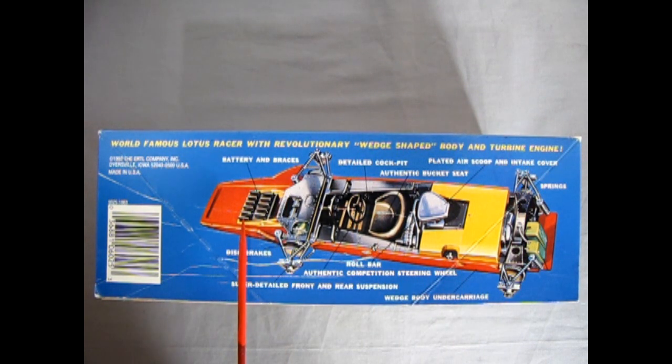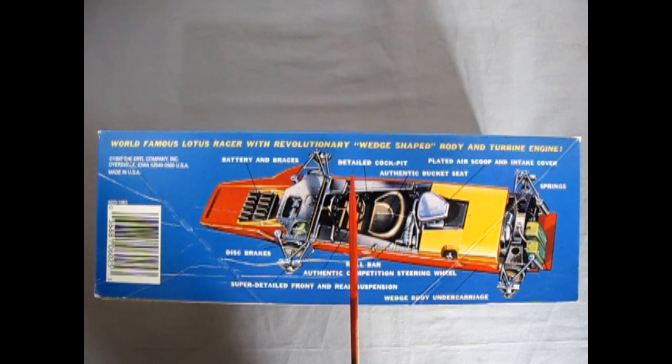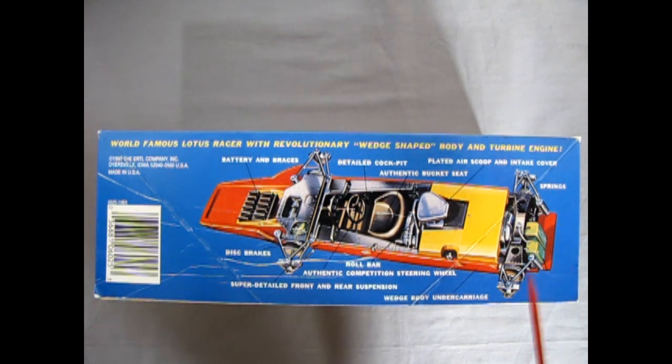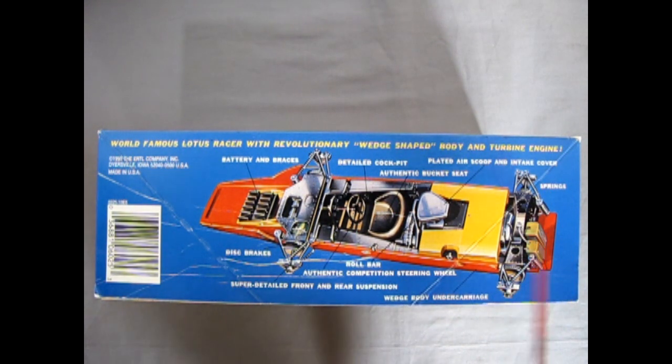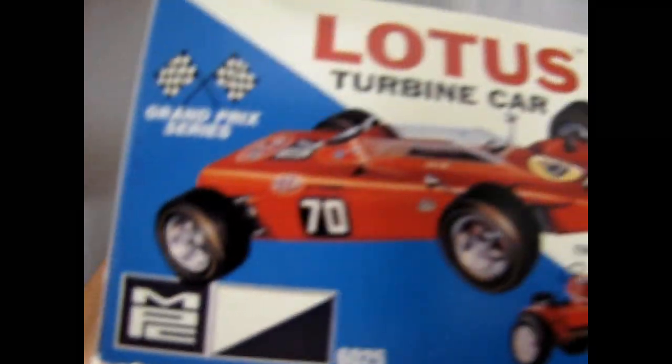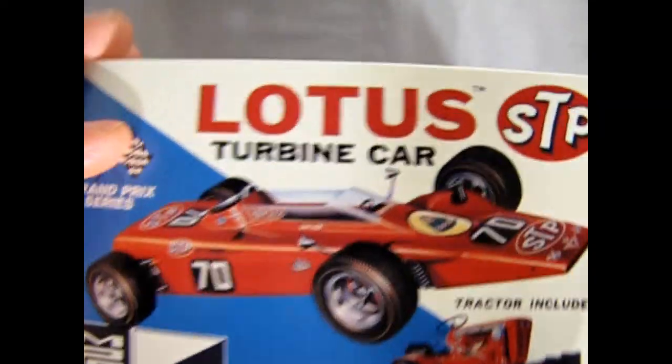You got the batteries up front and then we have disc brakes on here. A detailed cockpit. Authentic bucket seat. Here we have an air scoop and intake cover. The rear springs and rear axle, all independent suspension of course. A roll bar. Authentic competition steering wheel. Super detailed front and rear suspension. And the wedge body undercarriage.